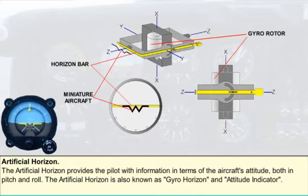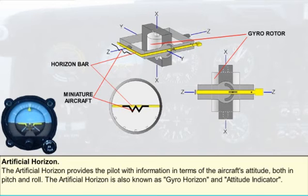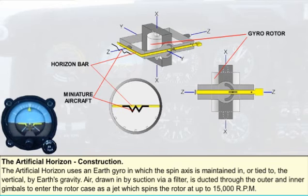Behind this representation of the aircraft is the horizon bar, linked to the gyro in such a way that the bar is gyro-stabilized parallel to the true horizon. The artificial horizon may be suction or electrically driven, and is also known as a gyro horizon and attitude indicator.